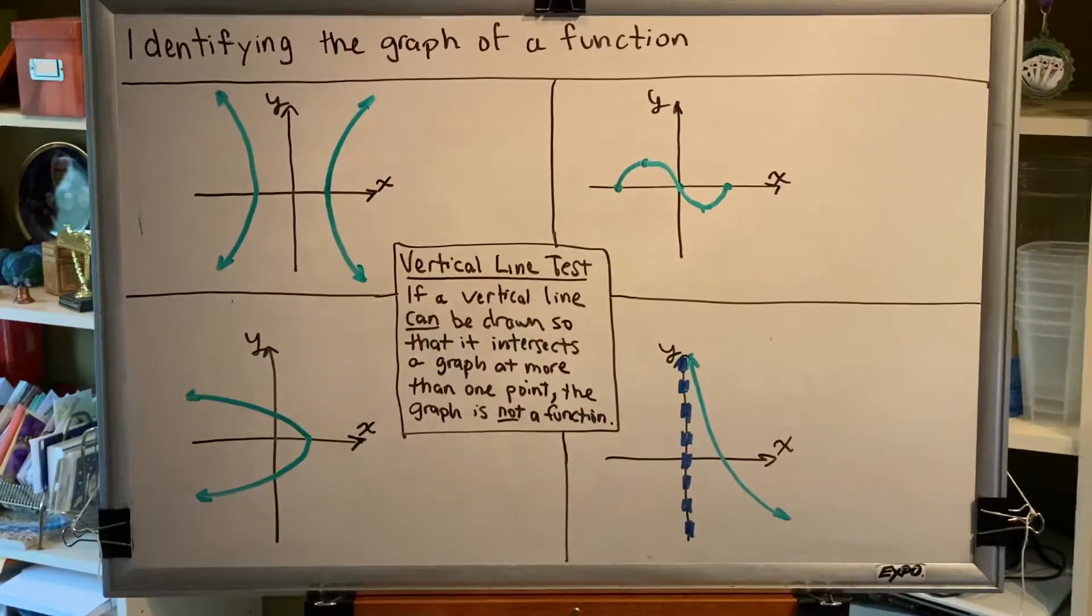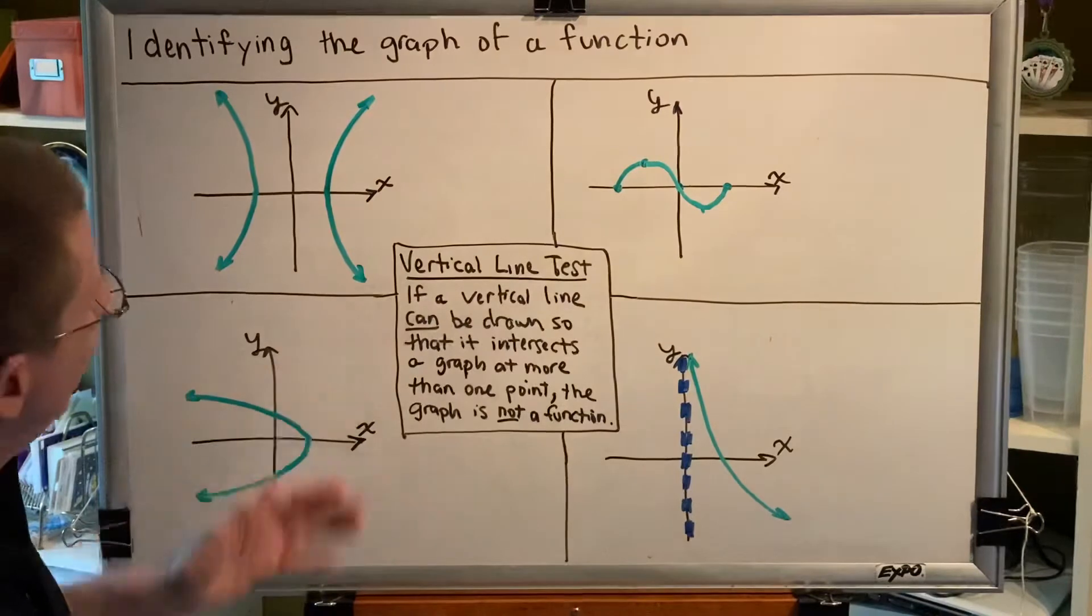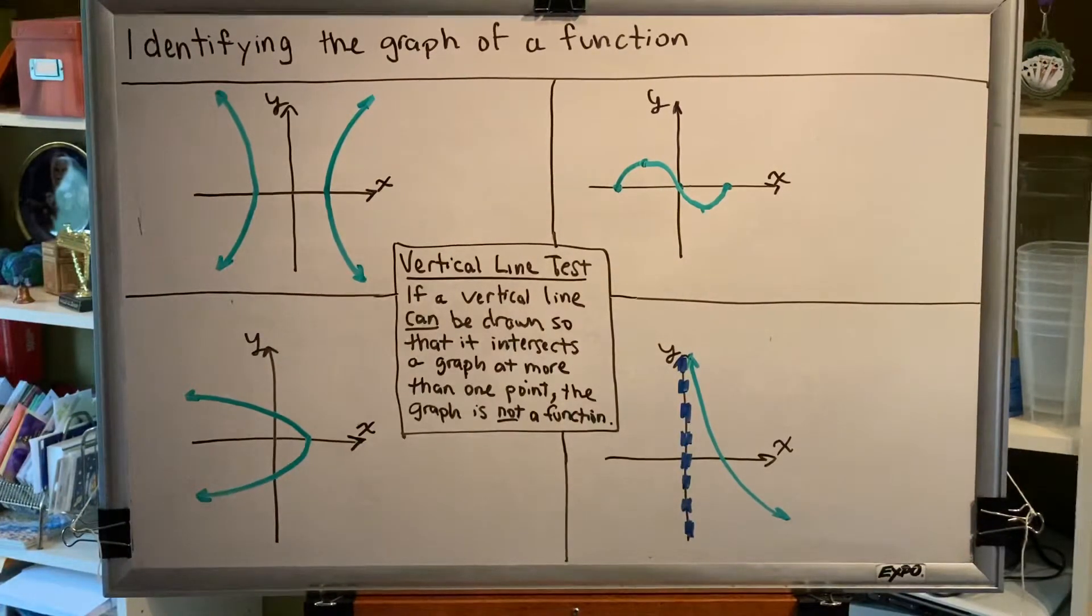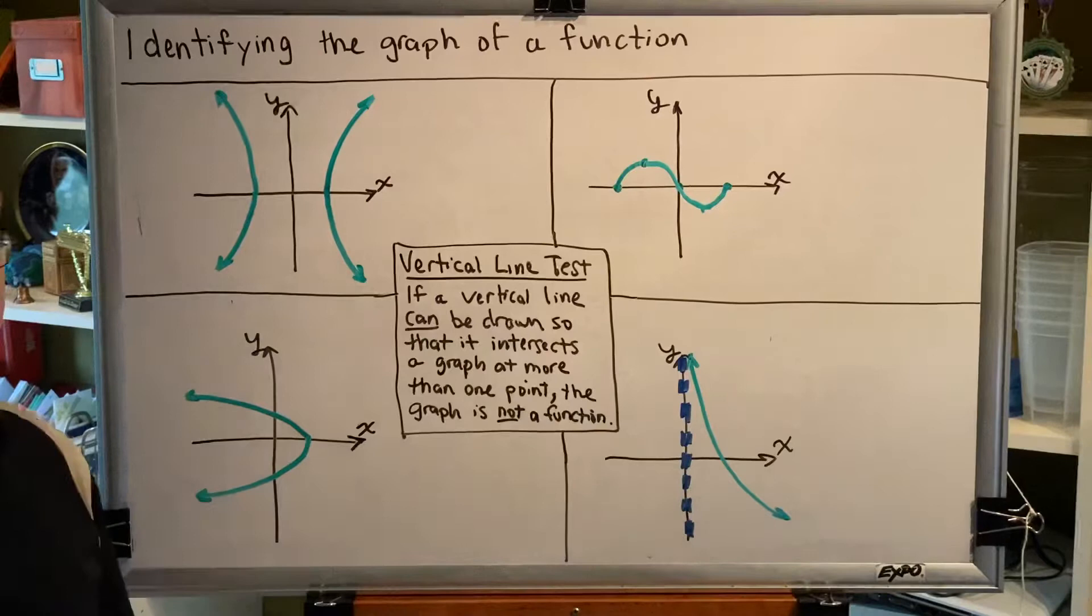If a vertical line can be drawn so that it intersects a graph at more than one point, the graph is not a function.